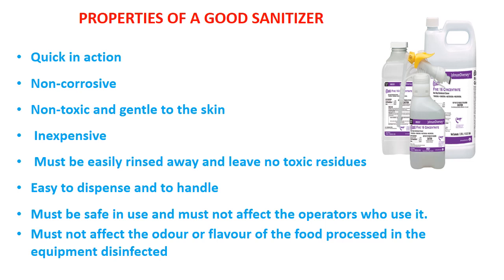Now let us discuss the properties of a good sanitizer. Sanitizers are agents used for killing microorganisms and making food contact surfaces and machinery safe for hygienic food production. The desirable properties are: quick in action, non-corrosive, non-toxic and gentle to the skin, inexpensive, easily rinsed away leaving no toxic residues, easy to dispense and handle, safe in use and must not affect the operators, and must not affect the odor or flavor of food processed in the equipment after disinfection.